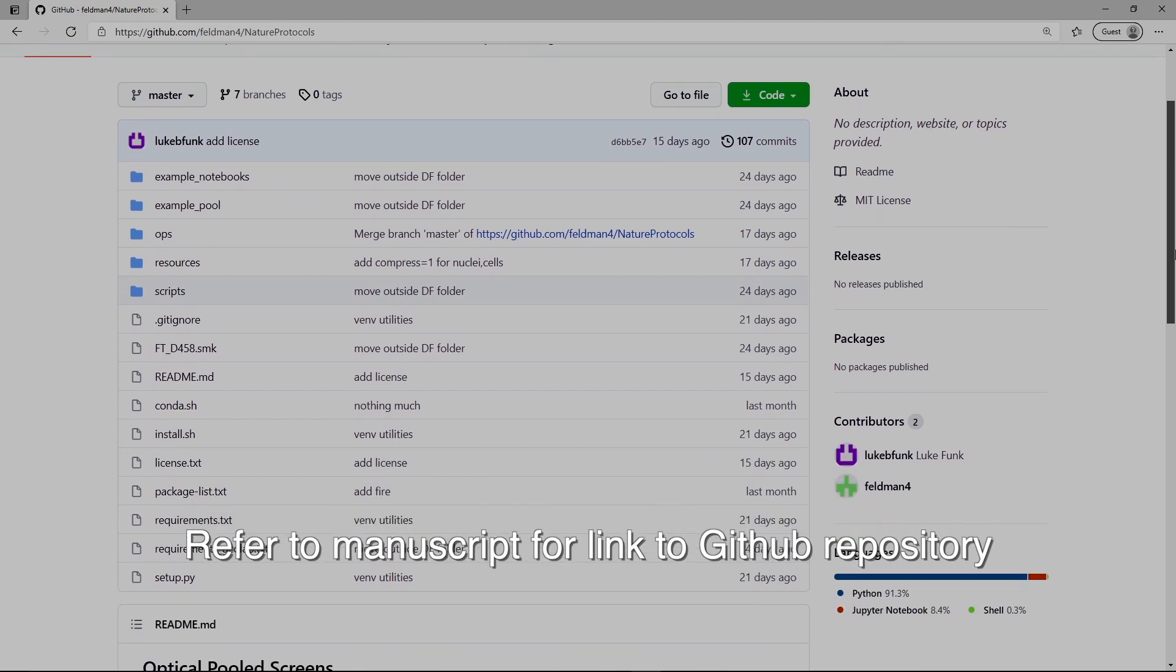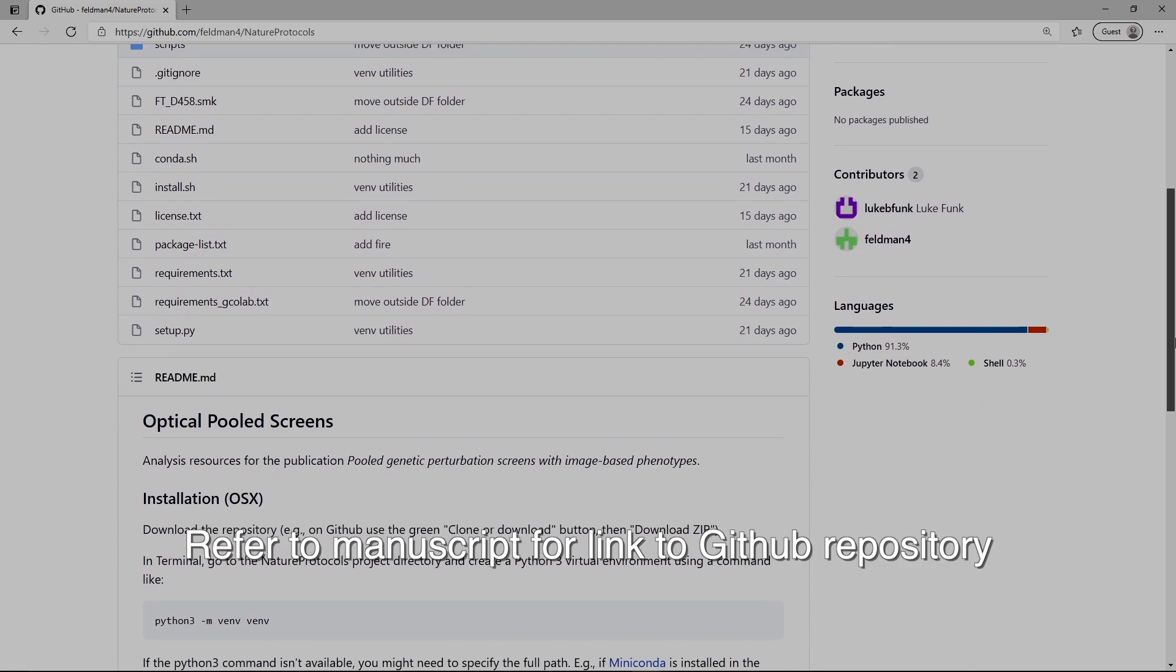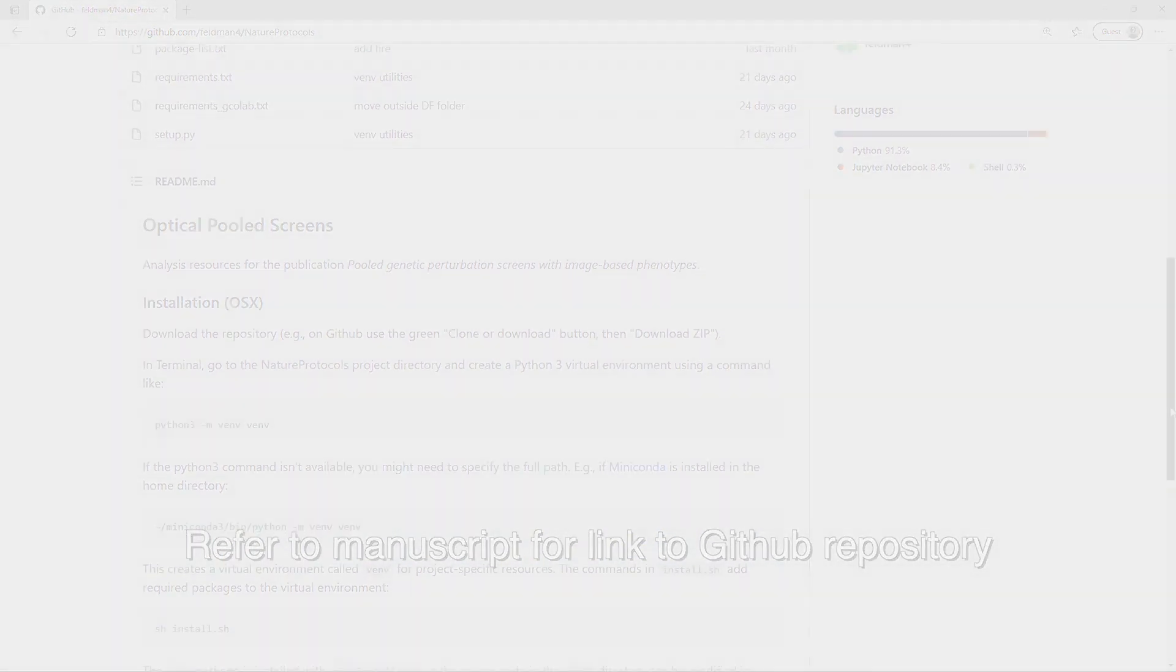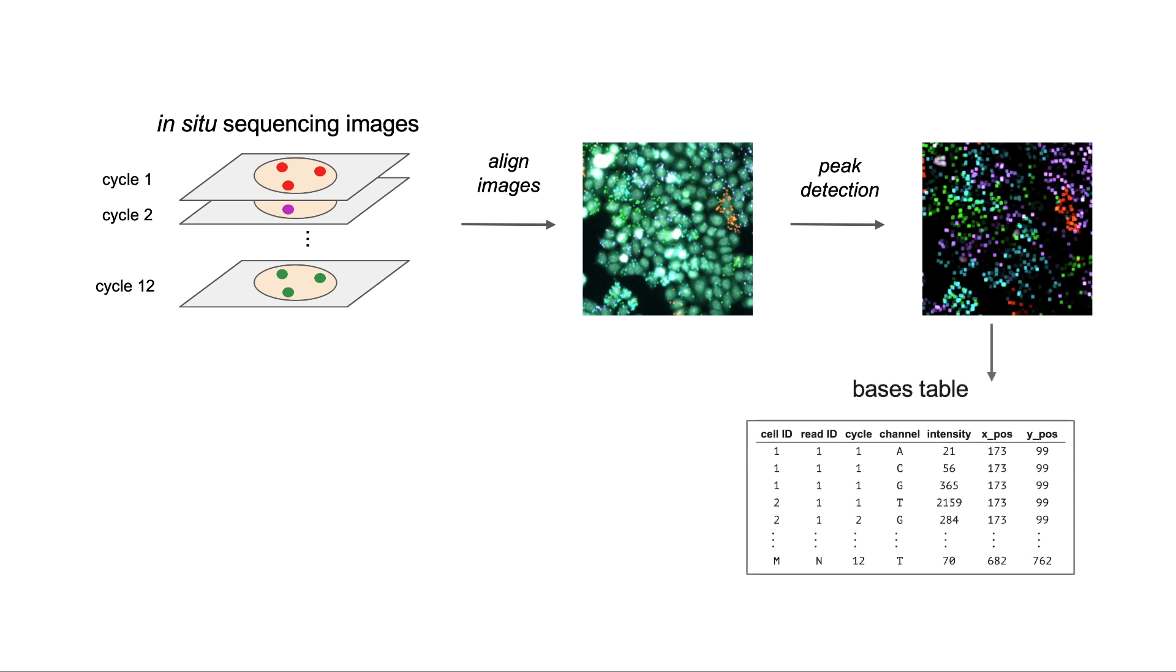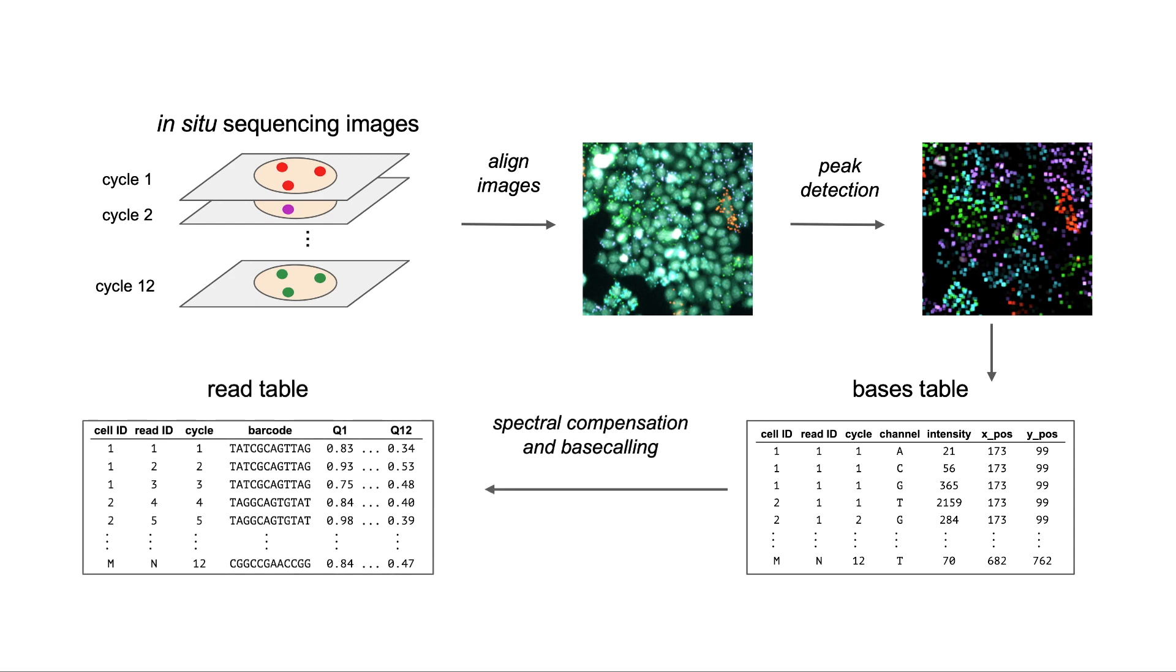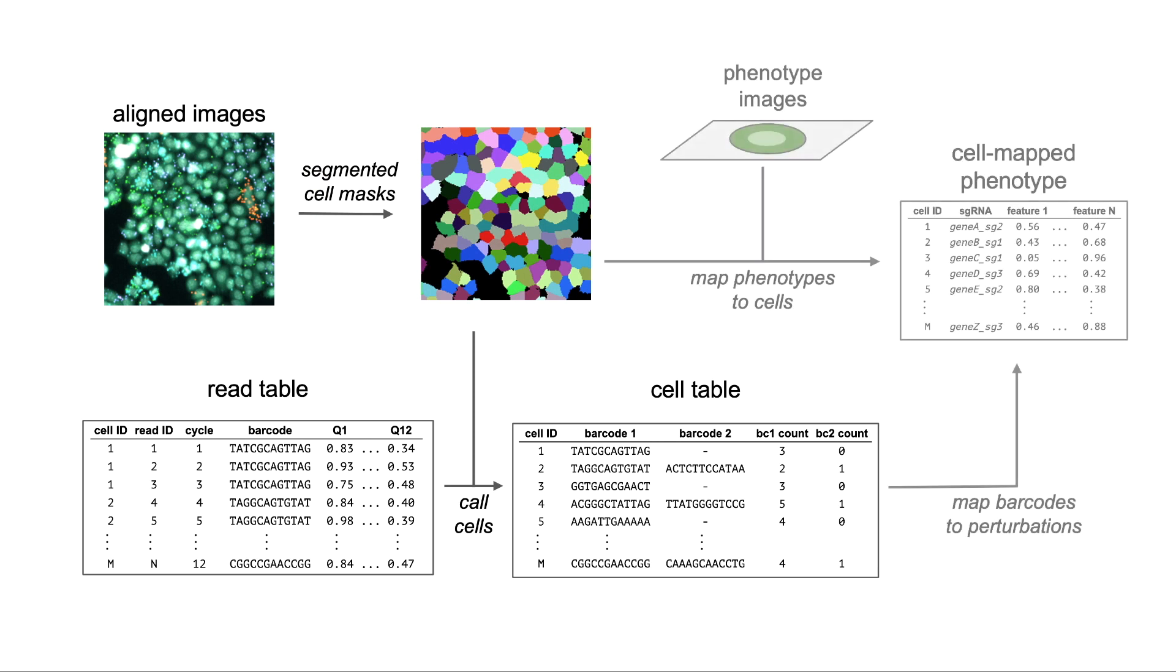Once all of the sequencing data are acquired, the perturbation carried by each cell can be identified using a custom Python package available on GitHub. The major steps performed by the package functions are to align images across cycles of sequencing, identify sequencing spots, extract base intensities for each spot across all cycles of sequencing, and to call barcode read sequences following spectral compensation. Segmented cell masks are then used to determine consensus barcode calls for each cell and to map the perturbation identity to the phenotype data.